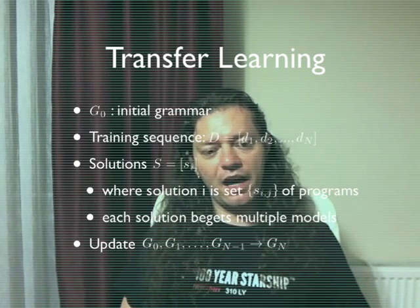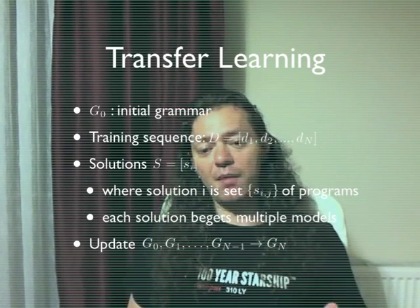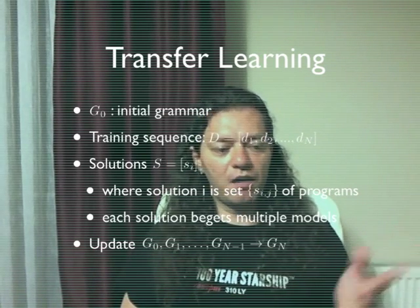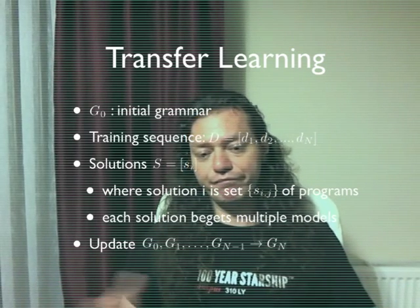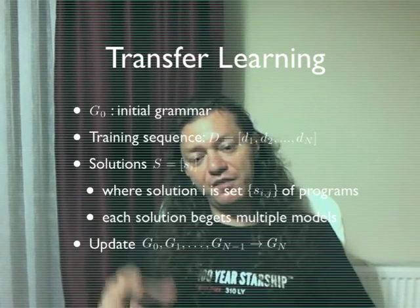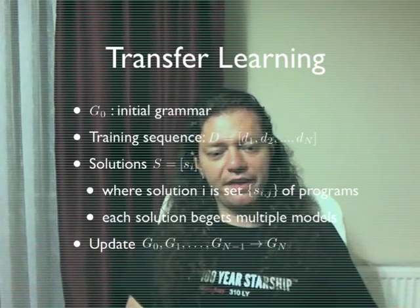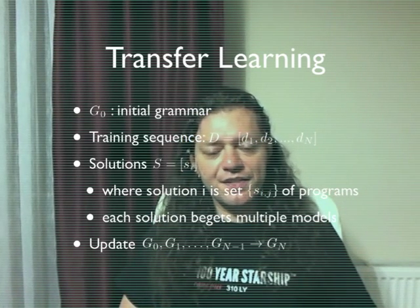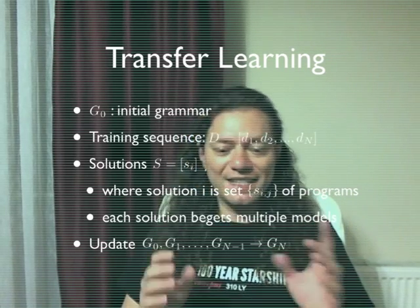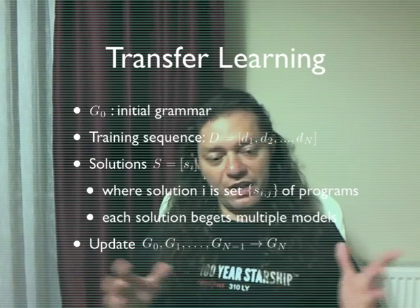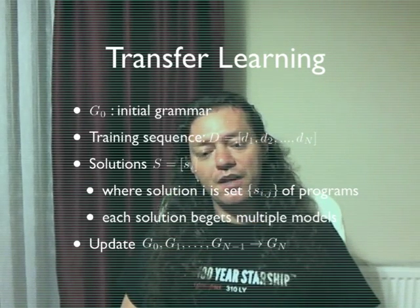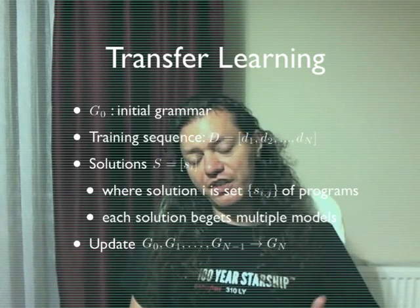G0 is the initial grammar, and we have a training sequence D of M problems, capital M. The i-th can be any kind of problem — one could be a reinforcement learning problem, and another could be a set induction problem. What matters is that these differences are represented adequately in the VI data structure, which can be pretty much anything. The solutions are a sequence of SI's, and each solution SI is a set of programs SIJ, because in universal induction each solution gives rise to multiple models — induction is basically a universal mixture.